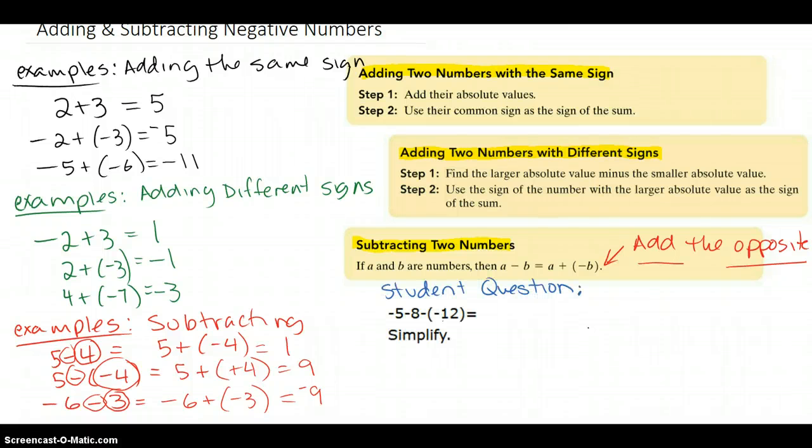So my last example is going to be a combination of three numbers, a student question. We're going to start left to right and figure out what negative 5 minus 8 is. So just making this larger, it's subtraction.